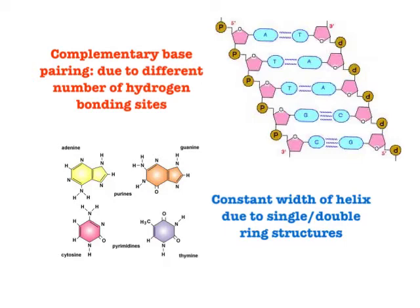Some critical ideas to know about how this works: the term is complementary base pairing — A's and T's go together, and G's and C's go together. The reason for this is due to their hydrogen bonding sites. C and G actually have three hydrogen bonds between them, while A and T only have two. If an A were to try to meet with a C, the two bonding sites would not match up with the three bonding sites, so they simply don't pair together. That's complementary base pairing: A and T bond together, and C and G bond together.